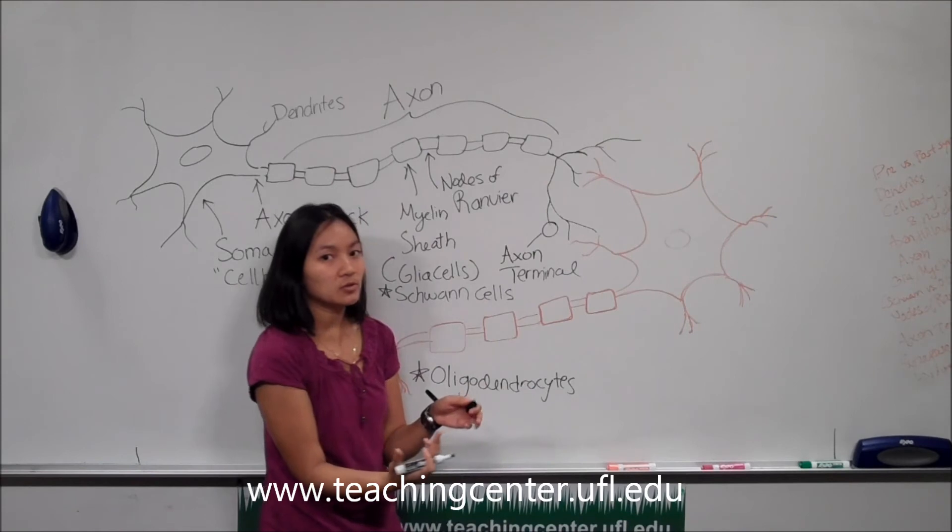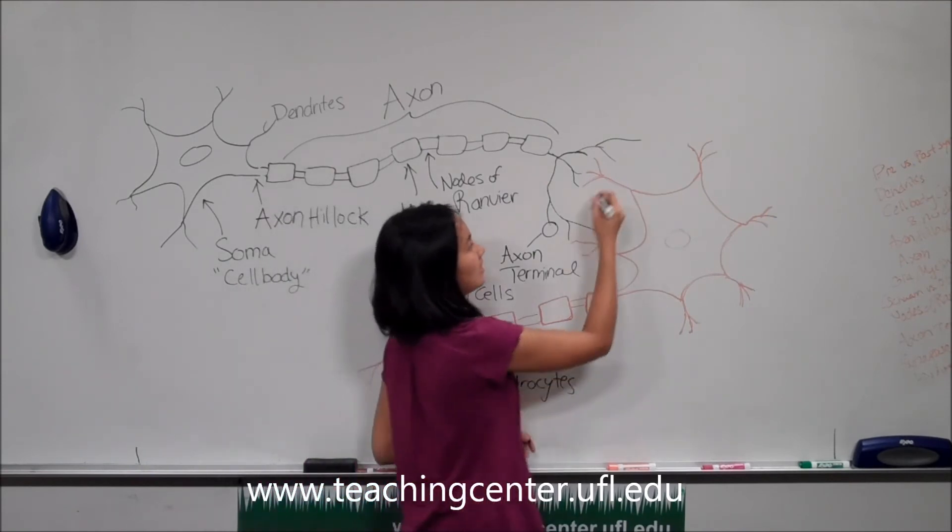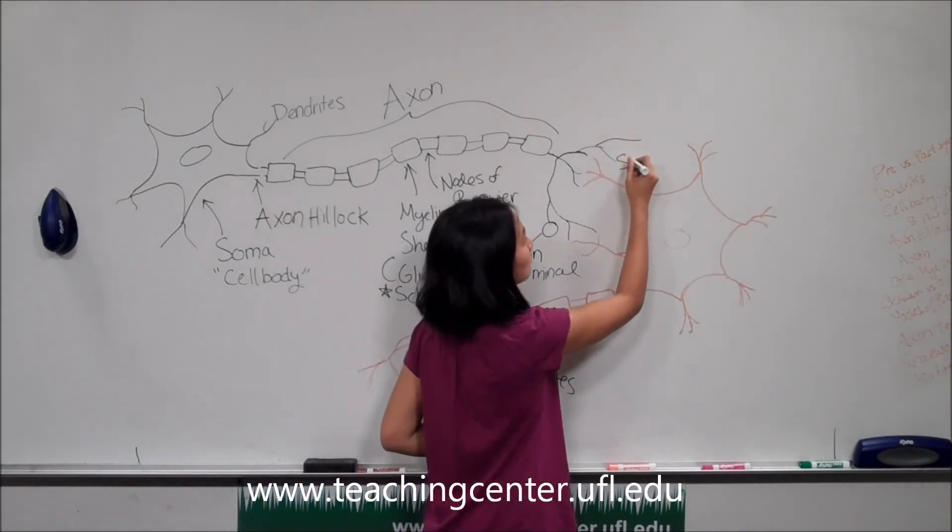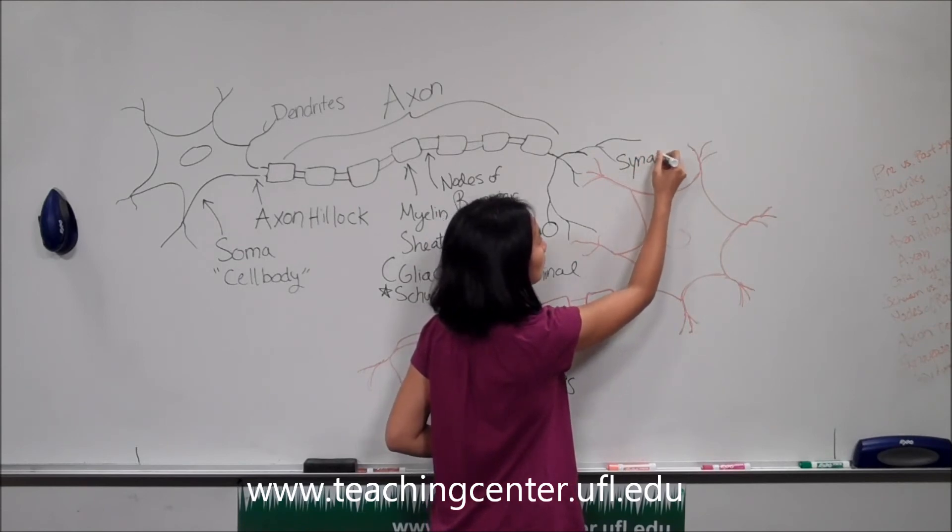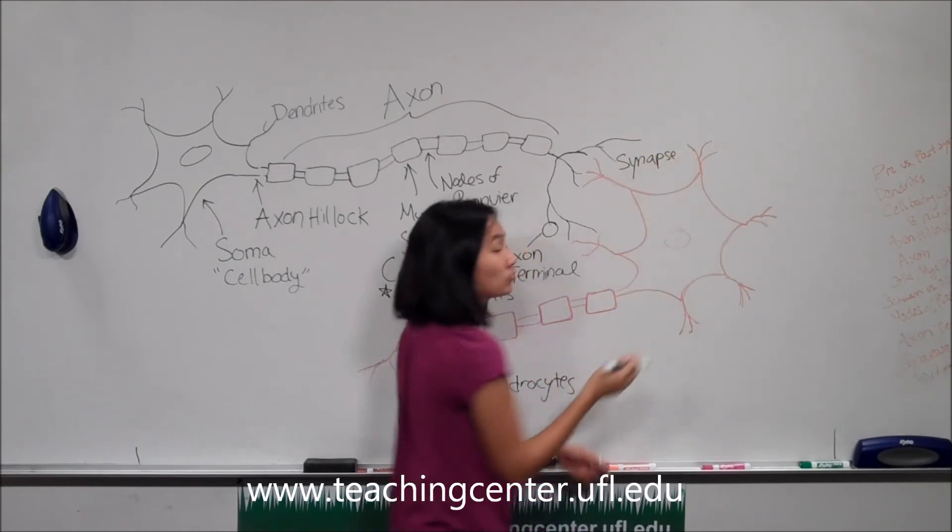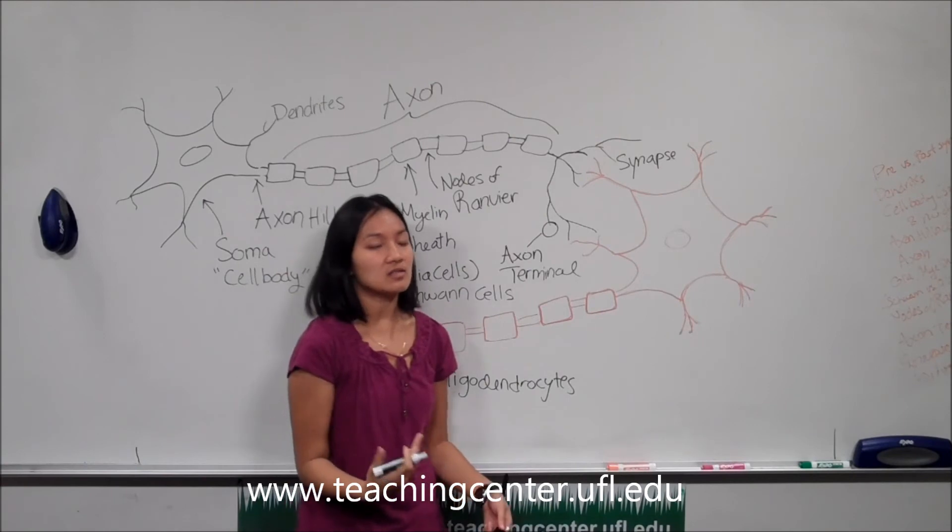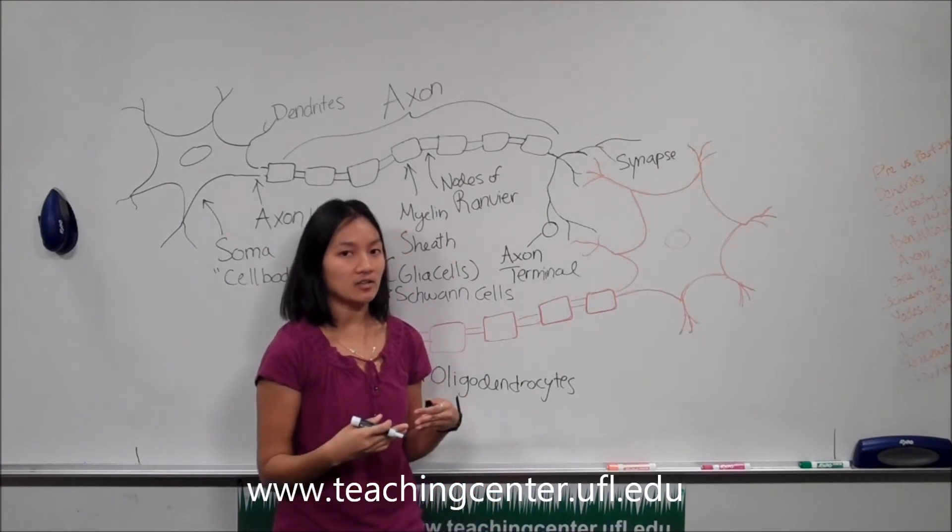Now the gap between two neurons is known as a synapse. So generally, most neurons never really make direct contact.